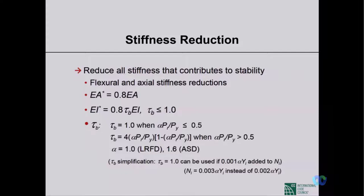An alternative: instead of applying notional load as 0.002Yi, apply 0.003Yi — in that case, tau_b (the stiffness reduction factor) can always be taken as 1, simplifying the analysis.